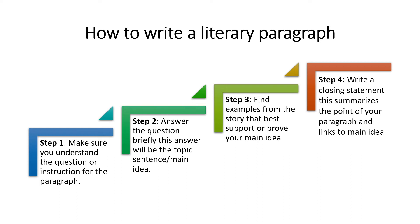Step three: find examples from the story that best support or prove your main idea. We've already understood the question and answered it, with our answer as our topic sentence. Now in step three, we want to go further into explaining and expanding on that main idea. Here you can use examples, or you can paraphrase — instead of quoting directly from the text, you can paraphrase what the writer or poet is trying to say, in all essence to enhance the main idea or topic sentence.